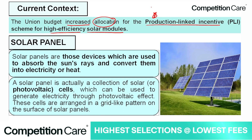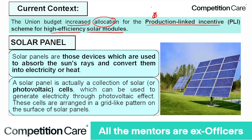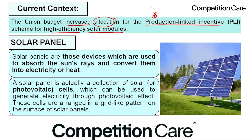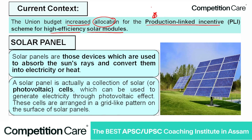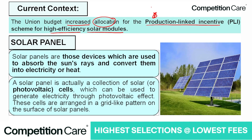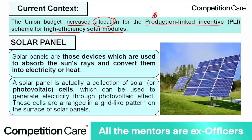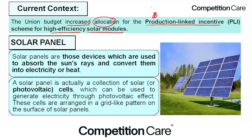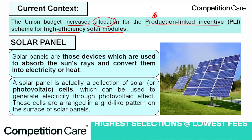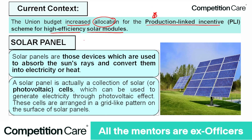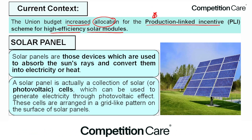The Production Linked Incentive scheme is designed to boost domestic production. The government backs production units in sectors like pharmaceuticals, electrical equipment, and solar modules, providing incentives to raise investment during the initial phase when demand and profit may be low. This helps ensure return on investment for manufacturers.